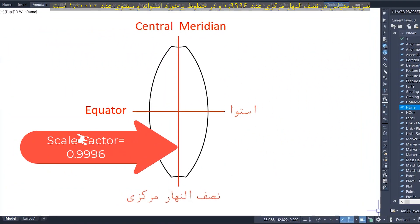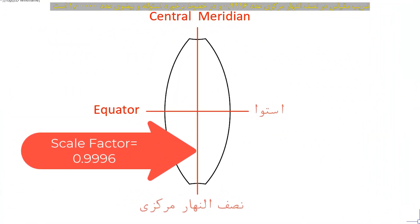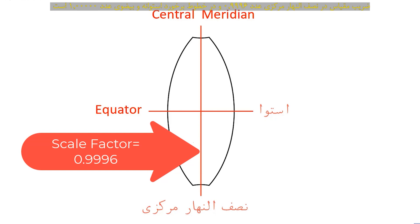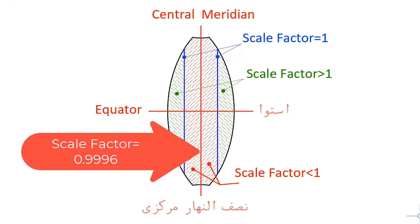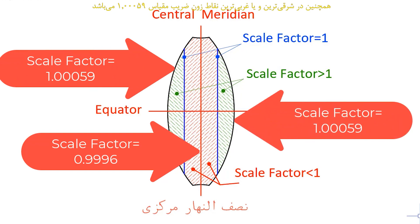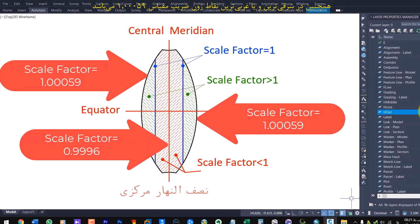The scale factor is 0.9996 in the central meridian and 1 in the cylindrical and elliptical collision lines. In the other area of zone, the scale factor is as shown. At the easternmost or westernmost point of the zone, the scale factor is 1.00059.